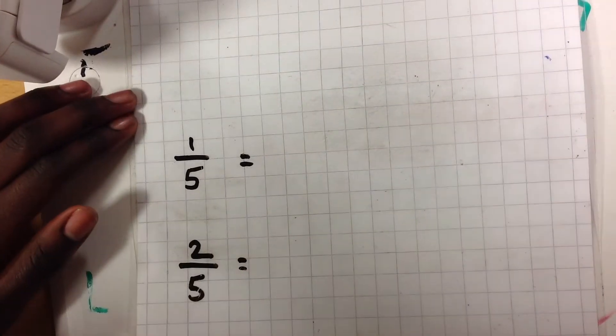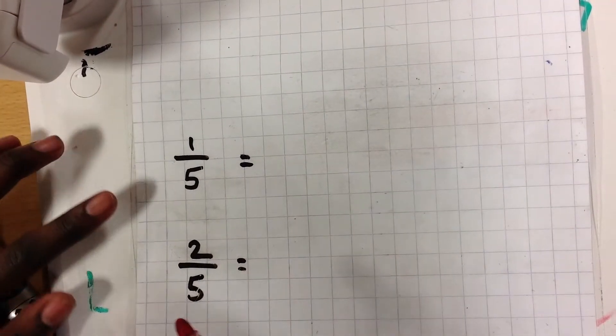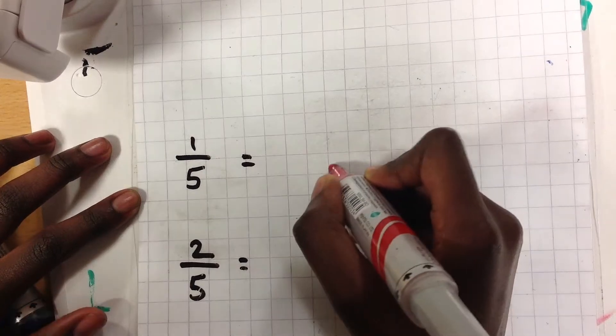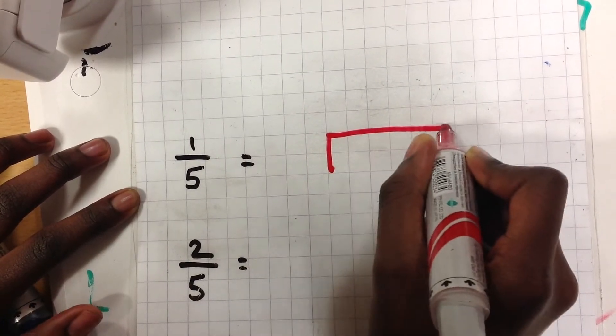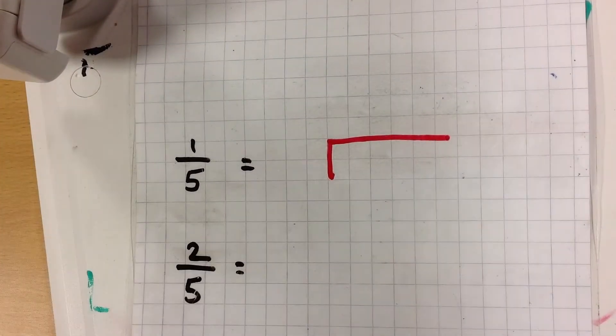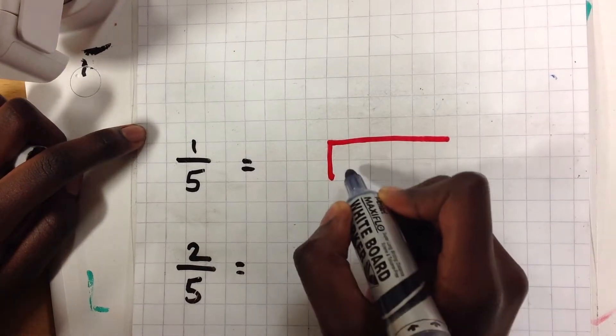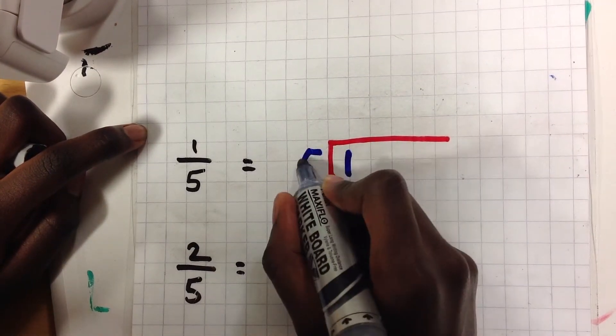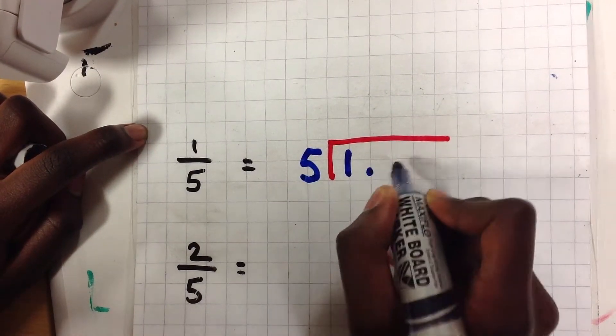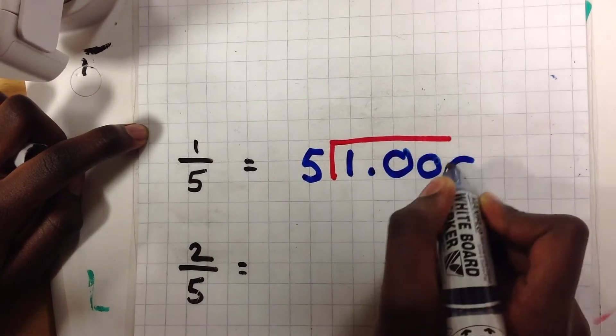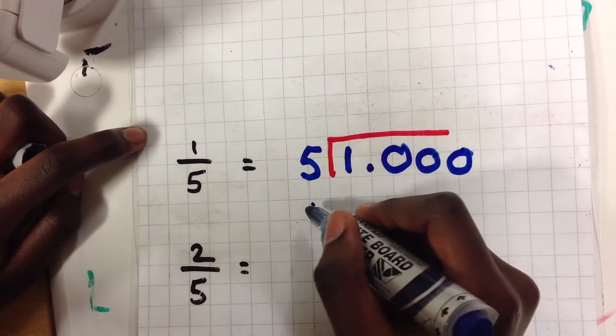Here are some more questions. 1 divided by 5. Using the bus stop method, 1 divided by 5, we'll put a few zeros.